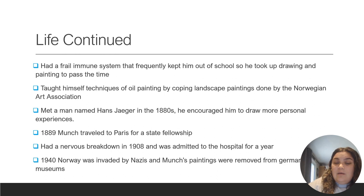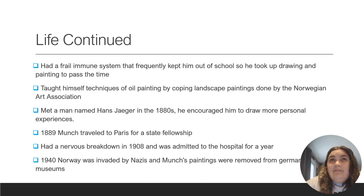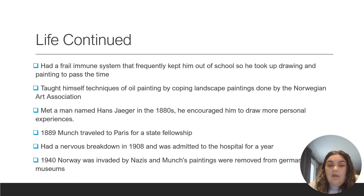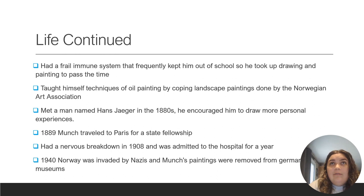In the 1880s, Edvard met a man named Hans Jaeger. Hans encouraged Edvard to take his paintings to a more personal and deeper meaning. So instead of continuing to copy landscape paintings, Hans said to draw from personal experiences. That guidance led to the painting I'm going to show in just a moment. Then in 1889, Munch traveled to Paris for a fellowship, which gave him more of a view of different things, and I believe helped his painting career.